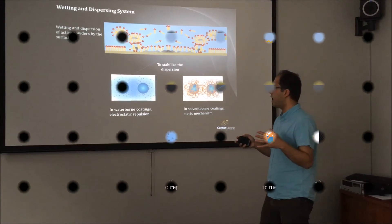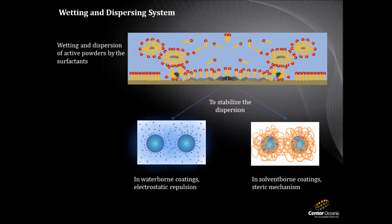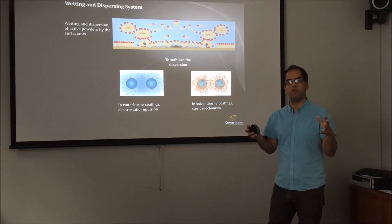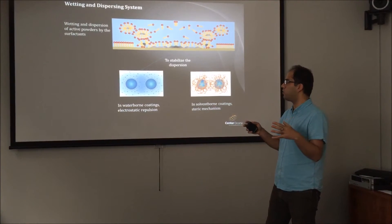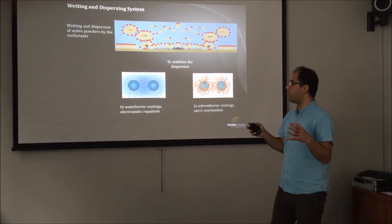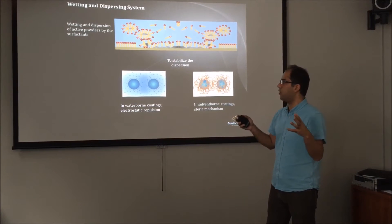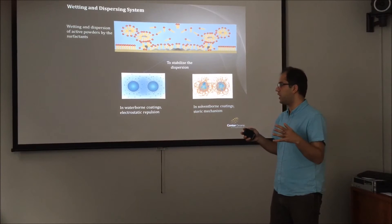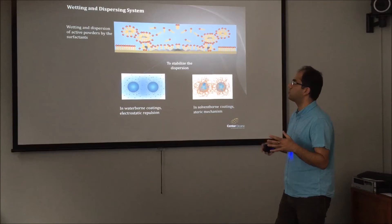In electrostatic repulsion, anionic and cationic particles are involved. Anionics are bound onto the surface and cationics are freely moving around it. Each powder, pigment, or filler is surrounded by a double layer of electrochemicals which makes them stable in the system through electrostatic repulsion.